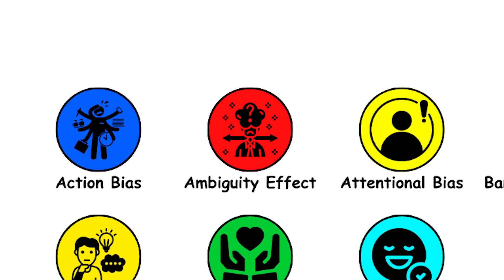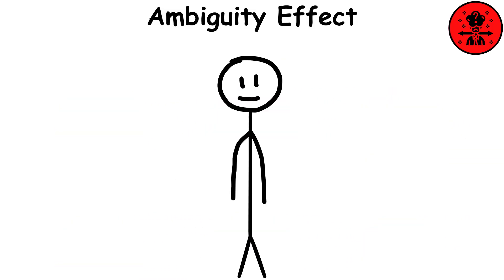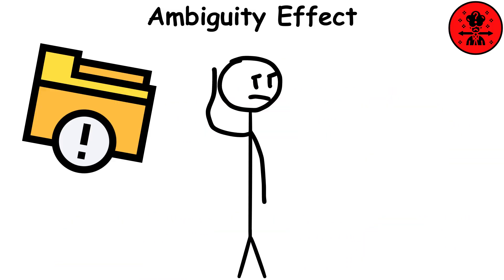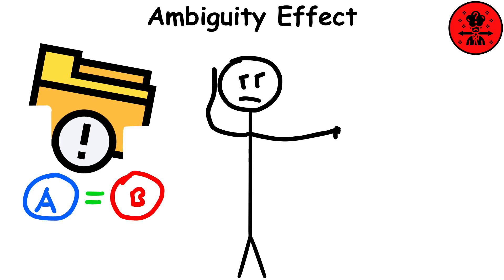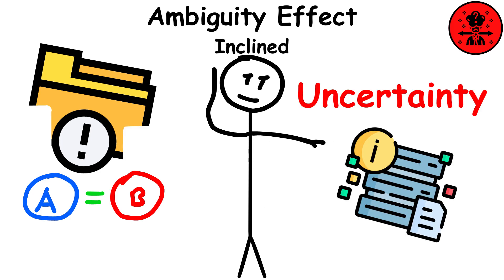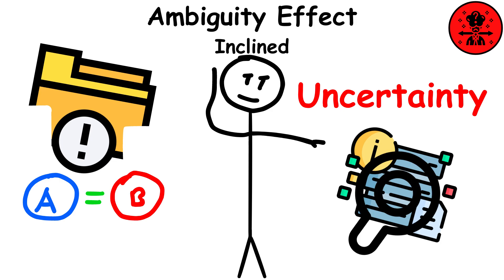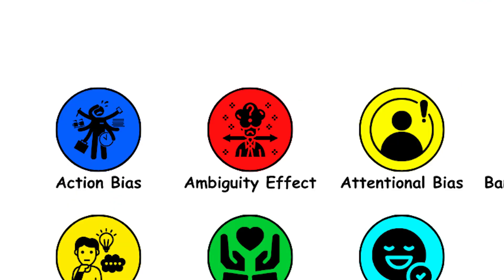Ambiguity effect. This describes how we tend to avoid options that we consider to be ambiguous or missing information. We dislike uncertainty and are therefore more inclined to select an option where the probability of achieving a favorable outcome is known.